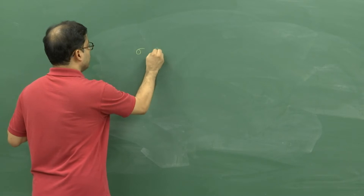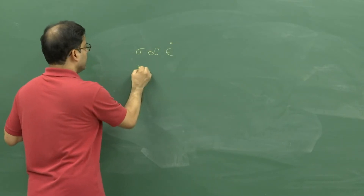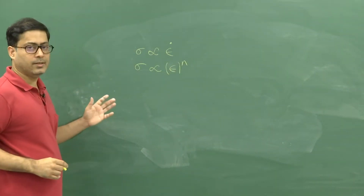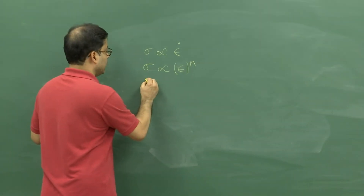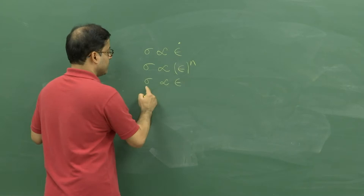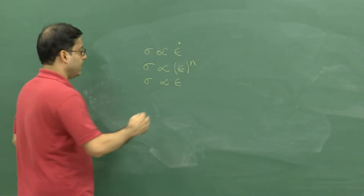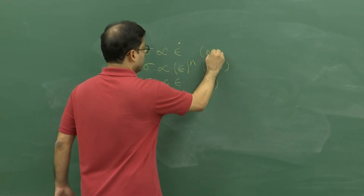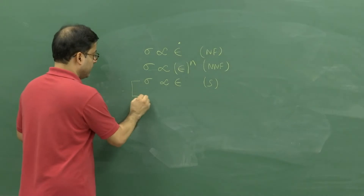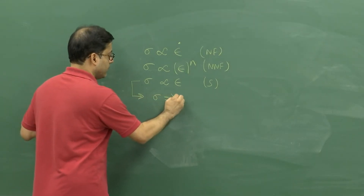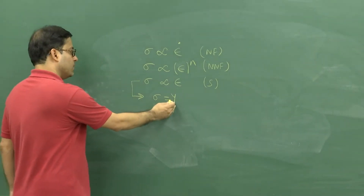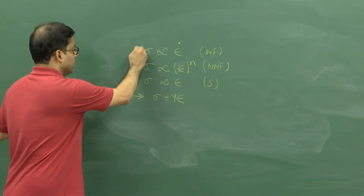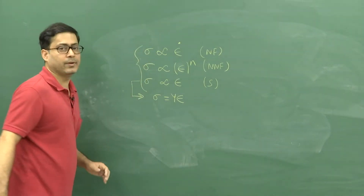We have written the equation for Newtonian viscous fluid (σ = μ·ε̇), the power law equation for non-Newtonian fluids, and for comparison we write the rheological equation for solids: stress is proportional to strain, i.e., σ = E·ε, where E is Young's modulus. This puts all three material behaviors — solid, non-Newtonian fluid, and Newtonian fluid — together in one place for comparison.